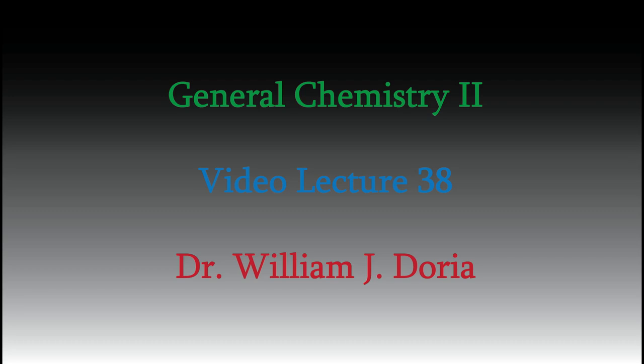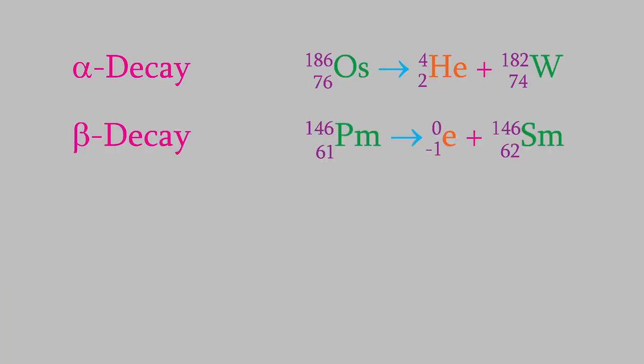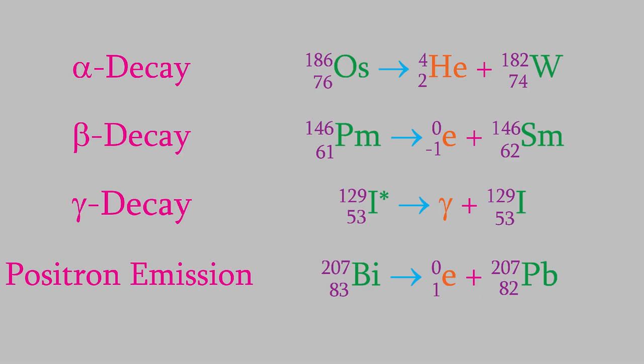In the previous video, we talked about four types of nuclear reaction: alpha decay, beta decay, gamma decay, and positron emission. Each of these is a type of radioactivity, which means they each produce a different type of radiation.